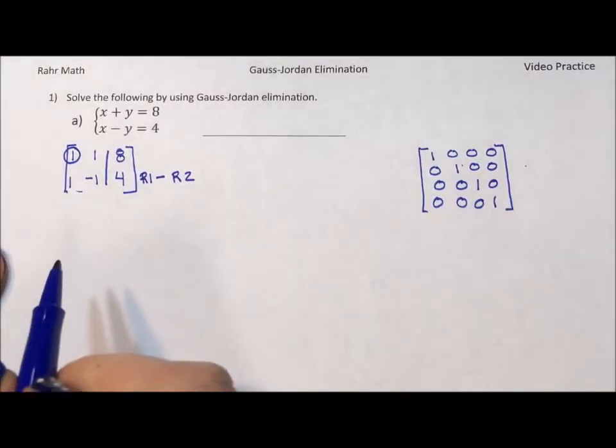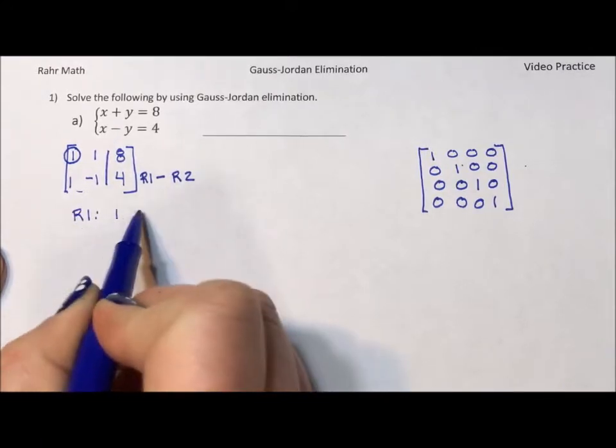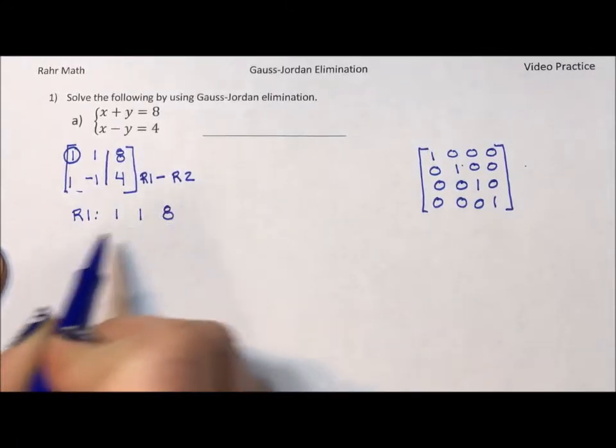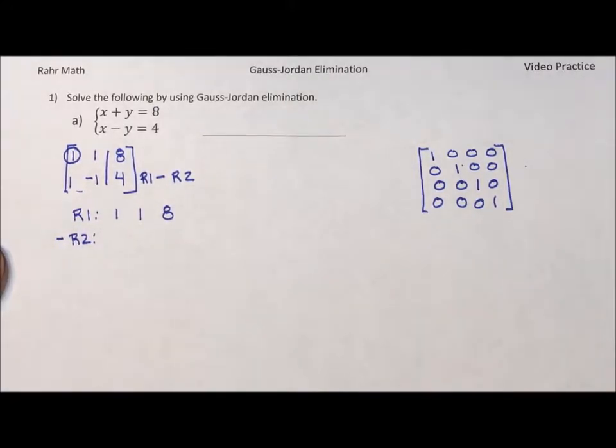Now the way I'm going to calculate this, I'm just going to write it out. I'm going to say row one is 1, 1, 8, negative row two. And I put that negative in there because I want to make sure that I add down throughout. If you start to subtract, you're going to eventually make a small mistake.